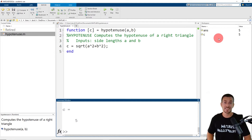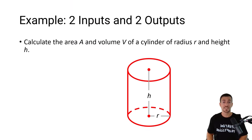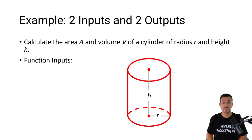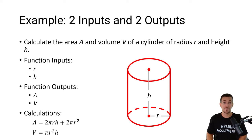Let's take a look at a second example problem with two input arguments as well as two output arguments. Our second example has two input arguments and two output arguments. The purpose of this function is to calculate the area A and volume V of a cylinder of radius R and height H. The two input arguments are the radius R and height H, and the two output arguments are the area A and volume V, where the area and volume are computed based on the values of the radius and height. Let's solve this problem in MATLAB.